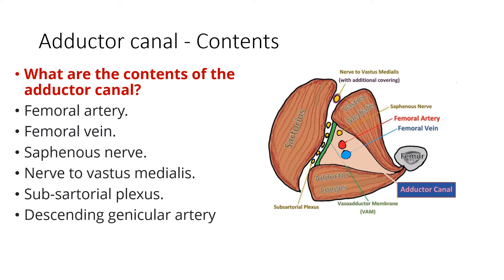Revising the boundaries: the adductor longus posteriorly, the vastus medialis laterally, the sartorius as the roof, and the fascia vasto adductoria as the fibrous membrane stretching between the vastus medialis and adductor longus. You are seeing the subsartorial plexus of nerves here. The contents within the adductor canal are the femoral artery, femoral vein, the saphenous nerve, the nerve to vastus medialis, the subsartorial plexus of nerves, and the descending genicular artery.